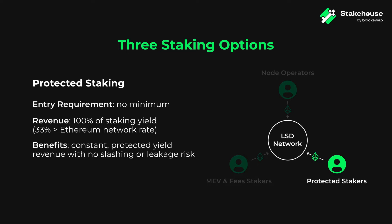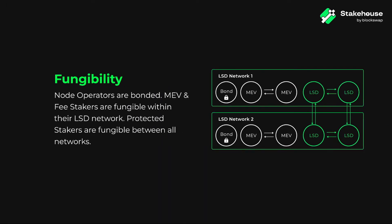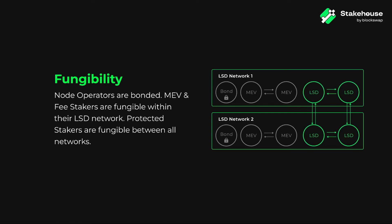It's important to keep in mind that each of the three LSD staking options have their own fungibility circumstances. With node operator staking, your 4 ETH investment is bonded to your validator — this ETH is locked in as collateral for any slashing penalties or leakage incurred by your validator. With MEV and fees staking, you receive MEV tokens, which are fungible within your LSD network; if slashing is severe enough in your network, these tokens could incur penalty losses, although this is very unlikely. With protected staking, you receive liquid staking derivative tokens, which are fungible across all LSD networks in the Stakehouse Protocol.